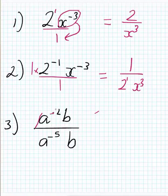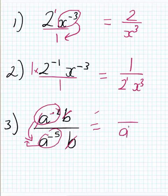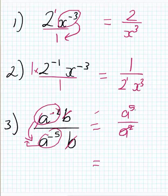The a to the power of negative 2 goes down to the bottom; the a to the power of negative 5 goes on top. The b terms, being positive, won't be moving — one's on top and one's on the bottom, so I can just cancel them. I'm left with a squared on the bottom (now positive) and a to the power of 5 on top (now positive). Since we have the same base, we can simplify further: 5 take away 2 gives a to the power of 3 as our final answer.